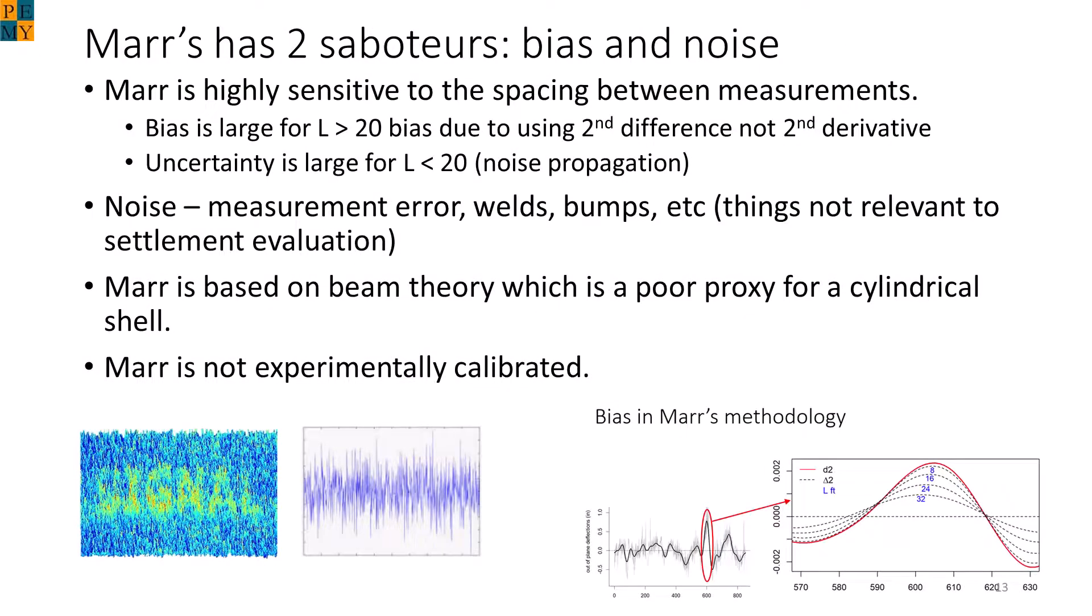So back to Marr. There are two very significant problems with it. It has bias whenever the elevation measurements are not 20 feet apart. When the spacing is small, such as for small tanks, the noise dominates. As mentioned previously, Marr was based on an outrageously crude model. The Marr method was never validated either analytically or experimentally. The bottom panel illustrates the noise and bias problem. Note that Marr's method can go wrong by a factor of 2 if the spacing is 32 feet. It is accurate at 8 feet after removing noise as shown.